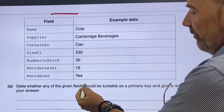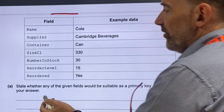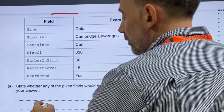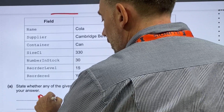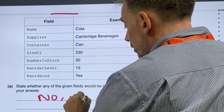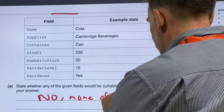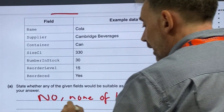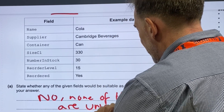State whether any of the given fields would be suitable as a primary key and give a reason for your answer. I'd generally say no — none of the fields are unique.